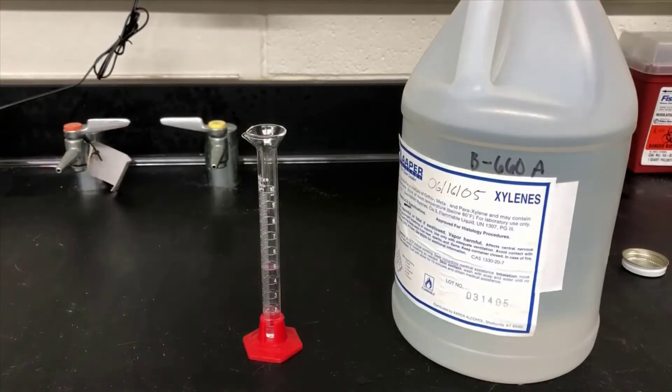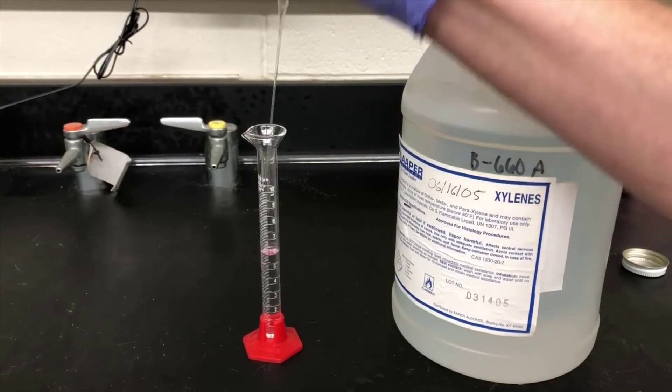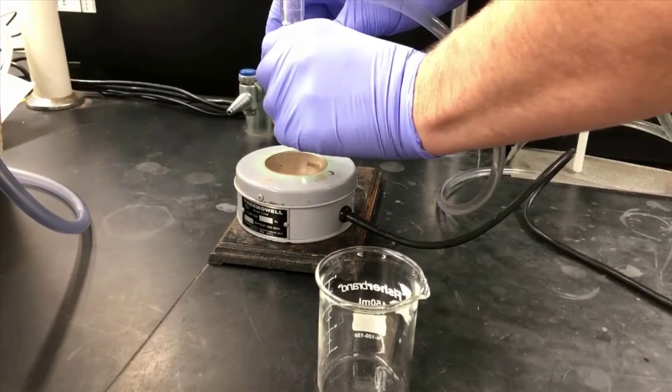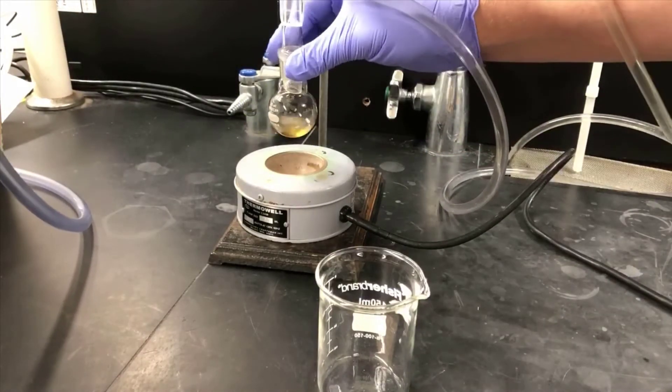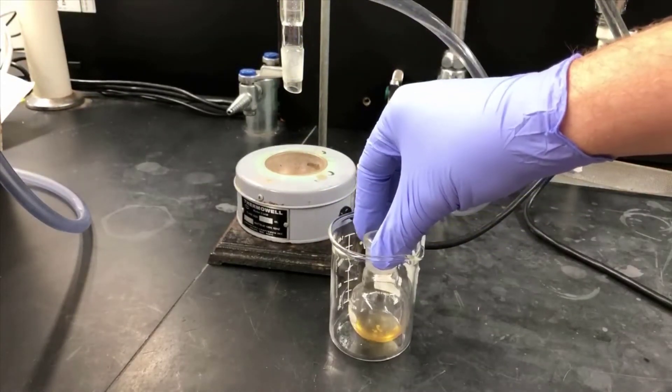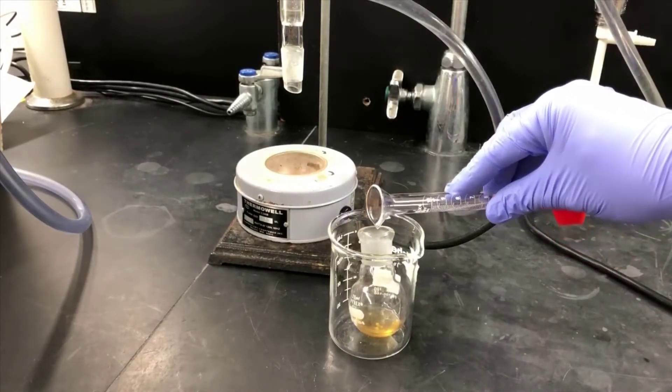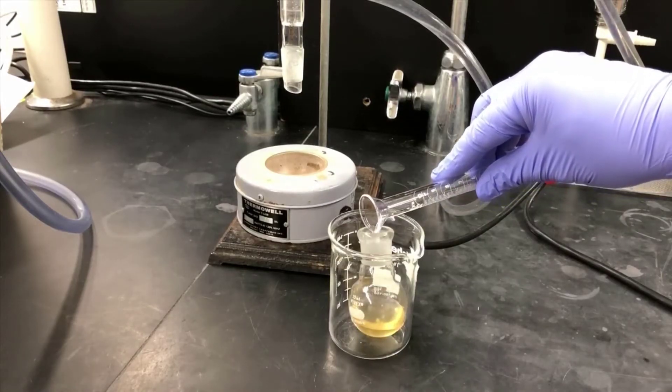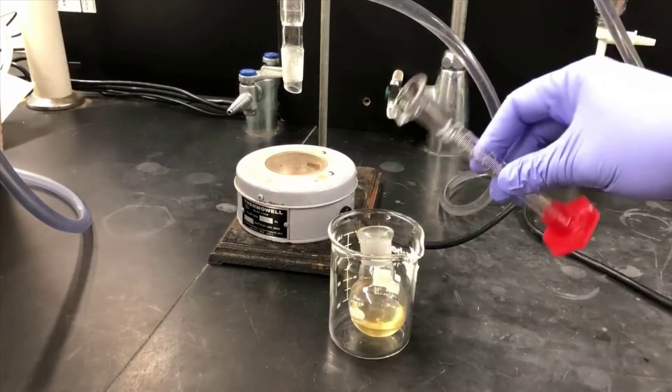Now I'm measuring out 6 milliliters of xylenes, and I'll be adding this to the reaction vessel. Now I'm removing the reaction vessel from the reflux apparatus, and I'll stand it up in a beaker. Then I'll add that 6 milliliters of xylene that I measured out in the previous step to the flask. The reason for adding the extra xylene at this point is to make sure that all of the product is dissolved. We need to decant away the boiling chips, so we need to make sure that all of the product is in solution at this point. We'll crystallize it out later in the next step.